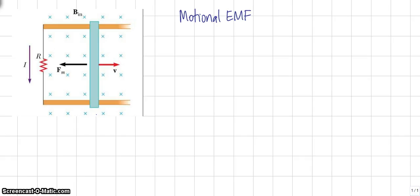What I want you to consider is a magnetic field, like the one shown in the picture, that points into the page. In the region of the magnetic field, we have a bar that is sliding along conducting rails which are connected by a resistor.